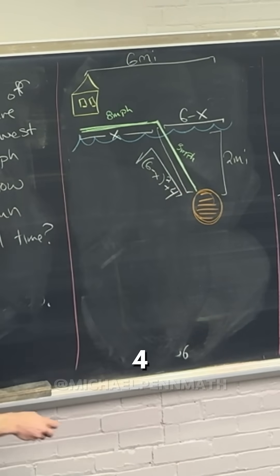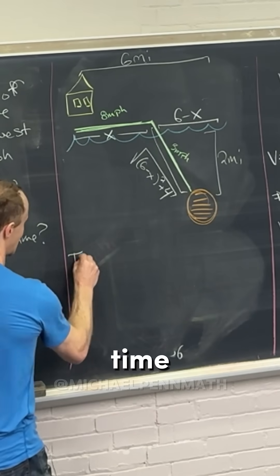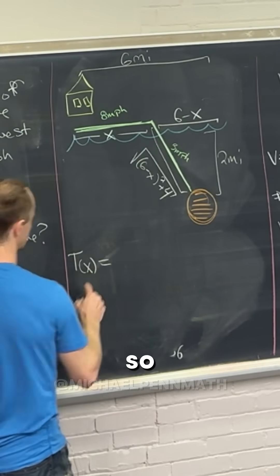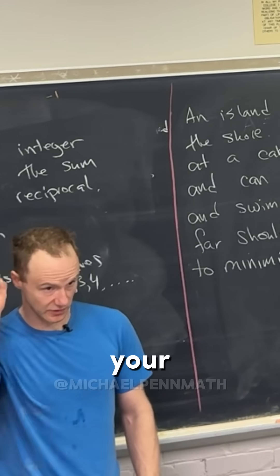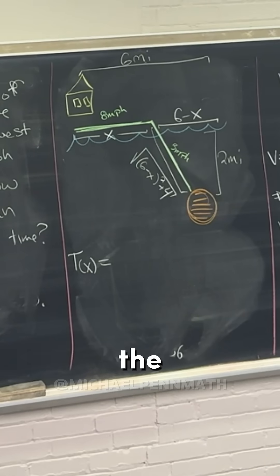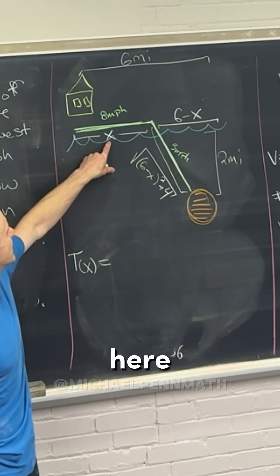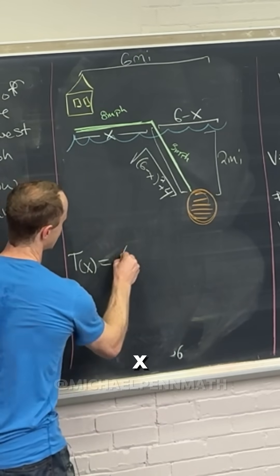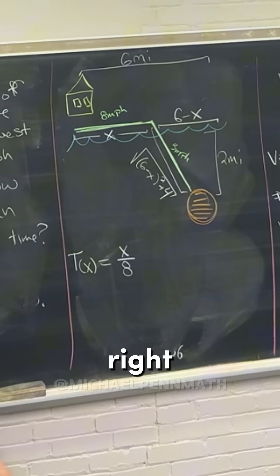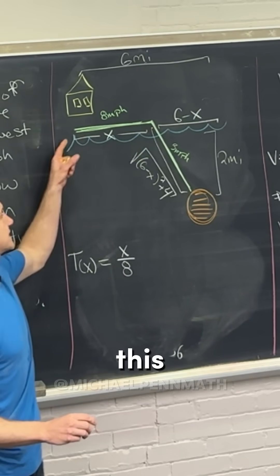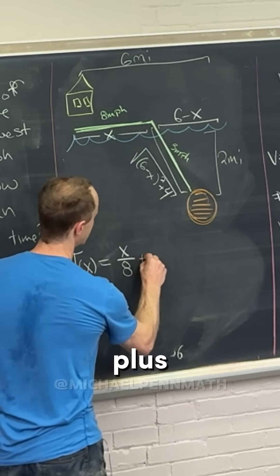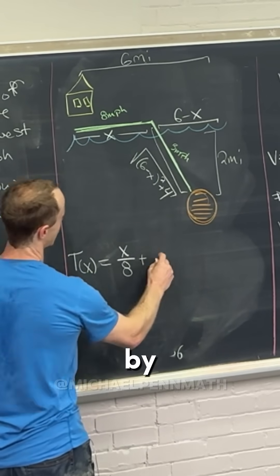By the Pythagorean theorem, your time in terms of your turning point is going to be the distance that you go here, so we're going to have x divided by 8. That's your time in this region, and then plus this divided by 3, so I'll just put one-third.